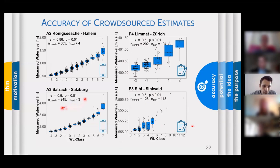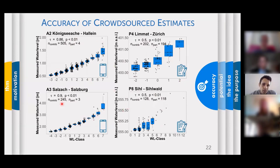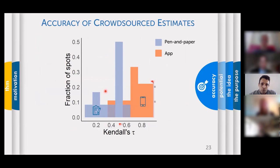The reason we think for this difference is that in the app, the number of participants contributing to one station was very low — three to four people, with mostly one person making most measurements — whereas at the pen-and-paper stations, many different people contributed individually. That one person in the app learned the method and was much more consistent with their estimates, whereas at the pen-and-paper stations many different people contributing each with slightly different interpretations led to more spread and uncertainty.